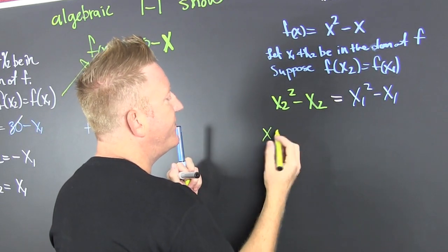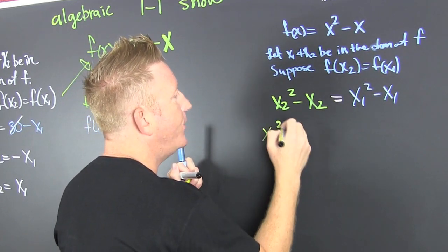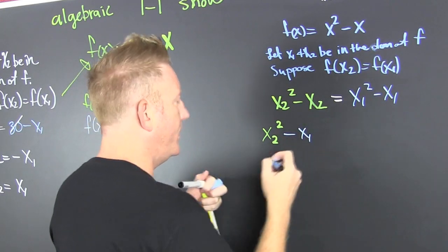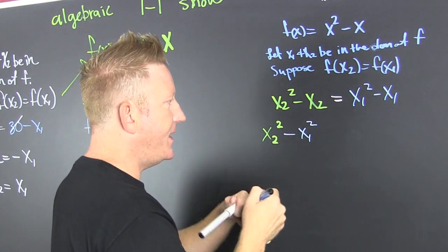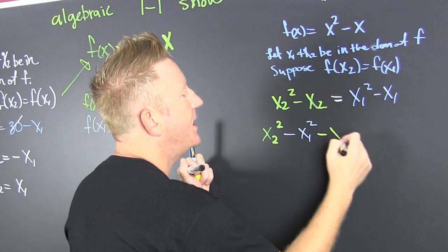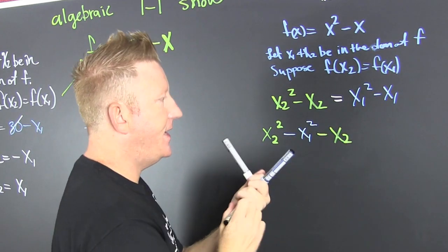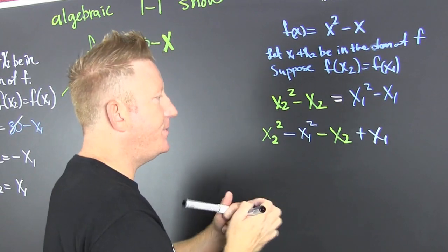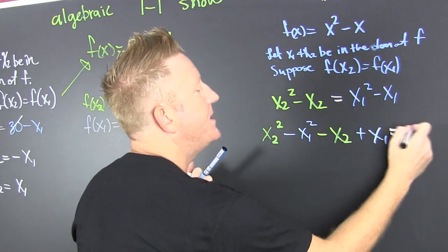And what we intend to do is show that it's not 1 to 1 when we don't get that x2 is equal to x1 anyways. If I go and I got those on the same side, I'm specifically saying x2 squared, and then minus x1 squared.